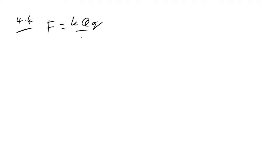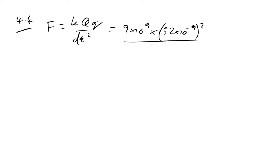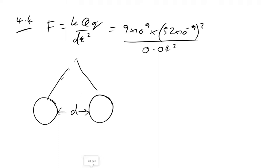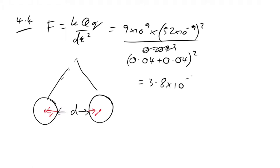The electrostatic force is F = kQ²/D². We have the same charge on both spheres, so F = k(52×10⁻⁹)² / D². Note: the separation given (0.04 m) is only to the surfaces — we need centre-to-centre, so D = 0.04 + 2×(radius) = 0.04 + 0.04 = 0.08 m. This gives F = 3.8×10⁻³ N.